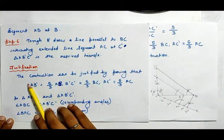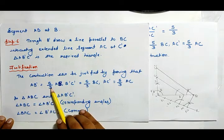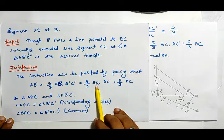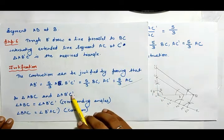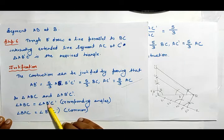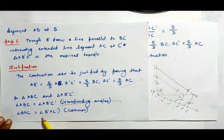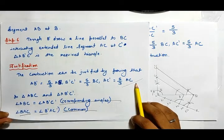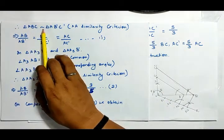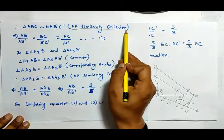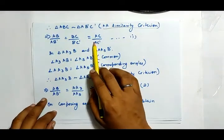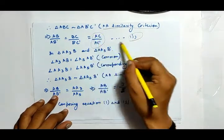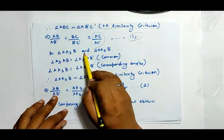The justification of the construction can be proved by showing that AB dash equals 5/3 AB, B dash C dash equals 5/3 BC, and AC dash equals 5/3 AC. In triangle ABC and triangle AB dash C dash, angle ABC equals angle AB dash C dash (corresponding angles), and angle BAC equals angle B dash AC dash (common). Therefore triangle ABC is similar to triangle AB dash C dash by AA similarity criterion, giving AB upon AB dash equals BC upon B dash C dash equals AC upon AC dash — equation 1.